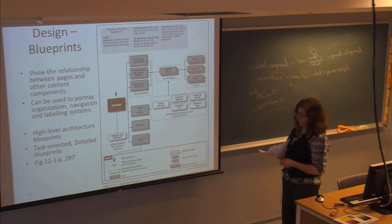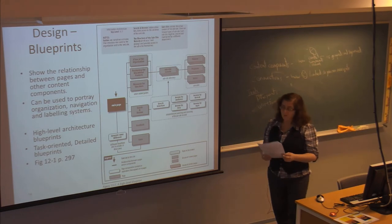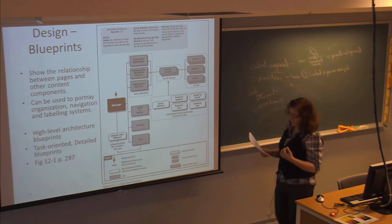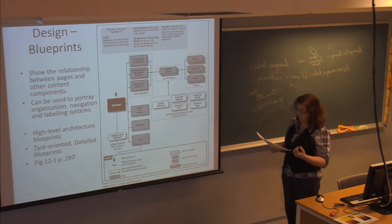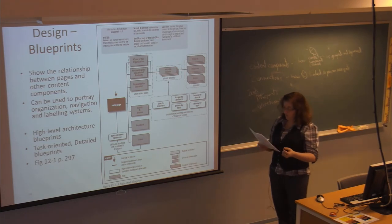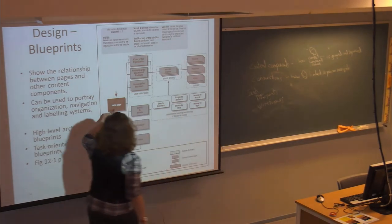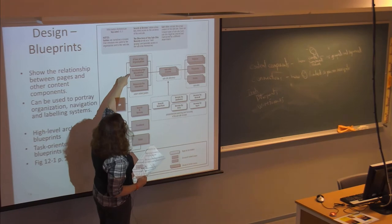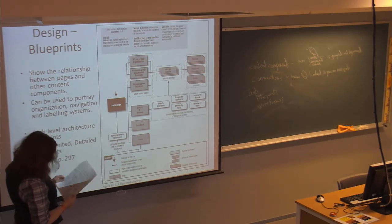A high-level blueprint — sometimes also called a site map, though it's not exactly the same — shows how the information of the website is grouped and what types of clusters it's organized into. It will usually show different components at the web page level, such as a main page, a tour of the organization, purchasing, and educational products. These are high-level components showing how you would group information on the site and what the relationship is between these components.